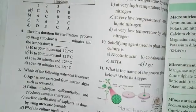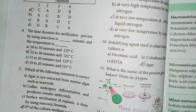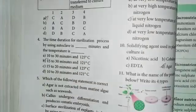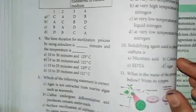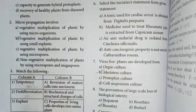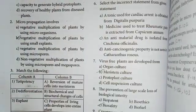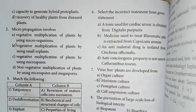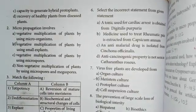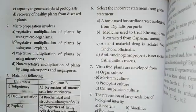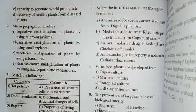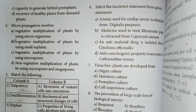Fifth question answer: Option D — pH of the culture medium is 5.0 to 6.0. For the 6th question, you will not answer the options; answer all of the above. 7th question answer: Option B — Meristem culture.